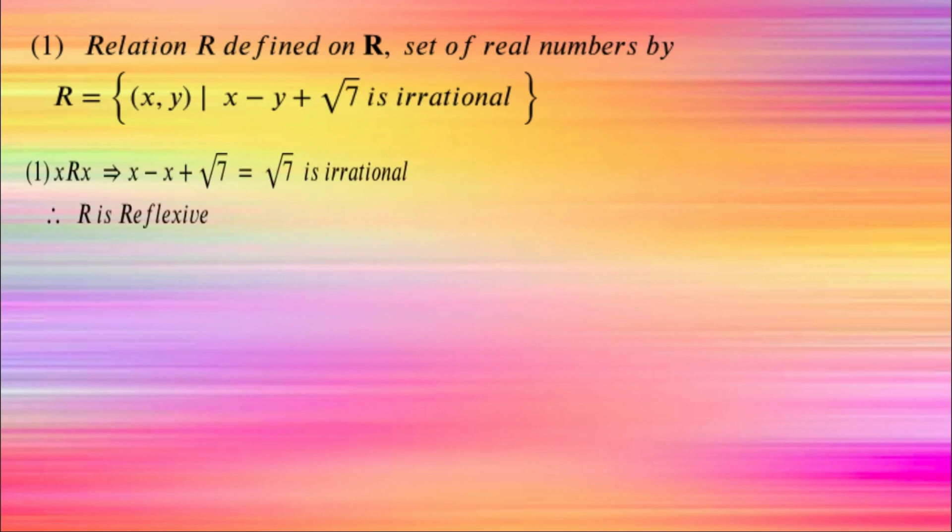Check that it is reflexive. If x is related to x, then clearly x minus x plus √7, which is √7, is irrational. That is true. So it is reflexive.